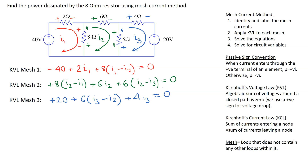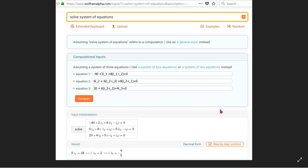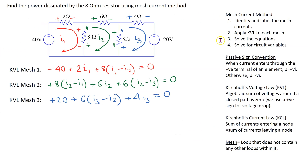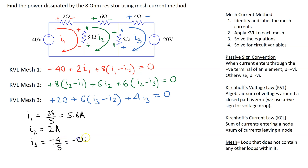This completes writing the KVL equations. There are three equations and three unknowns — I1, I2, and I3 — which can be easily solved. We can use Wolfram Alpha to find the solution by typing the equations directly into the web interface. Solving these equations, we obtain I1 = 28/5 = 5.6 amps, I2 = 2 amps, and I3 = -4/5 = -0.8 amps.